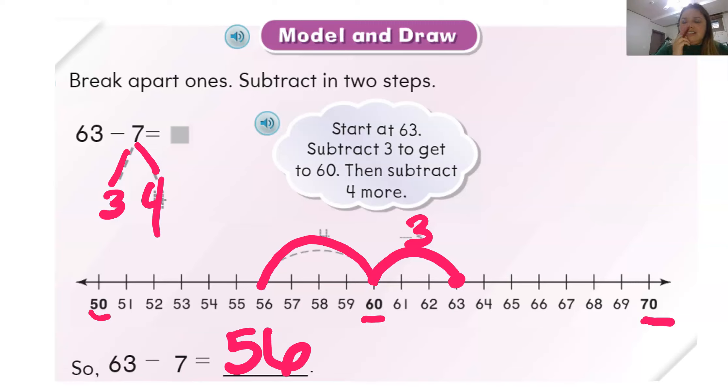So I can break up this 7 into 3 and something more that when I add something to 3, it's going to be 7. Right? So 3, 63 minus 3 is 60. And minus 4 more is 56. So you see, we didn't just do 63 minus 7. We did 63 minus 3, and then 60 minus 4. I know that was a little bit confusing. Raise your hand if that was a little bit confusing. That was a little bit confusing. It's okay because we're going to try some more examples.